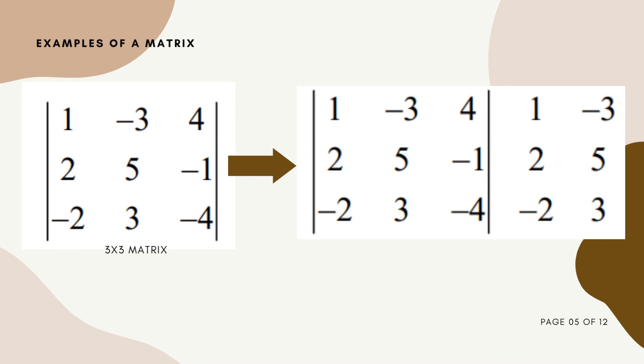Next, we have a 3x3 matrix. For larger matrices, it is the same process. Except we need to recopy all but one of the columns of the matrix or two to the right of the original matrix. Then we do the basket weave method. As you can see, we copy two columns from the original matrix.